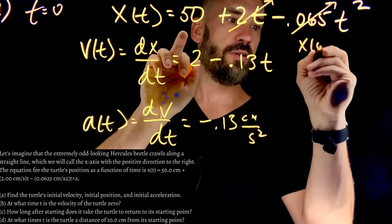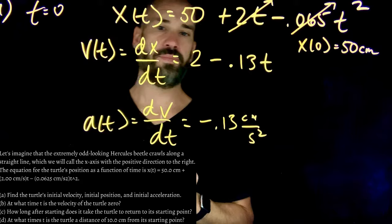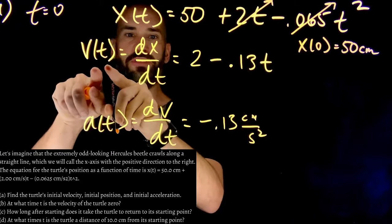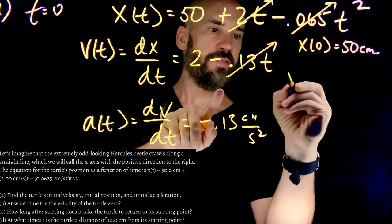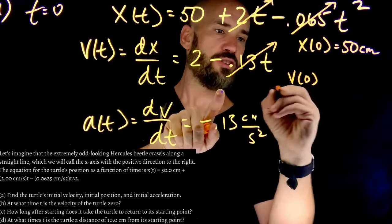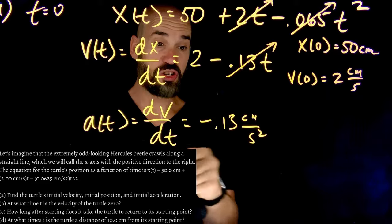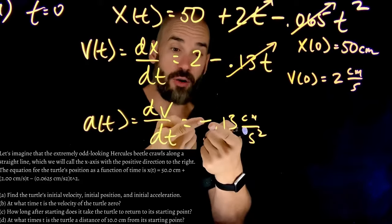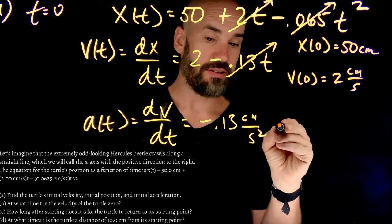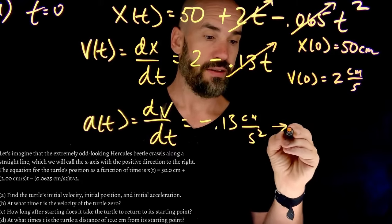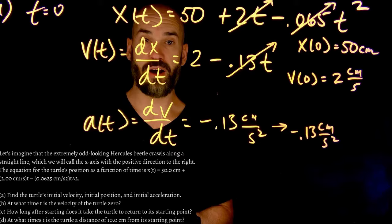So that means simply that x of 0, my initial position, is 50 centimeters. Super simple. Same thing. I just put t equals 0 in for here, and for here. That means this goes away, and I get that my v of t, my initial velocity, is just 2 centimeters per second. And here, for our acceleration, it never changes. It's always negative 0.13 centimeters per second squared. So my initial, final, middle acceleration is always just negative 0.13 centimeters per second squared. That takes care of part A.